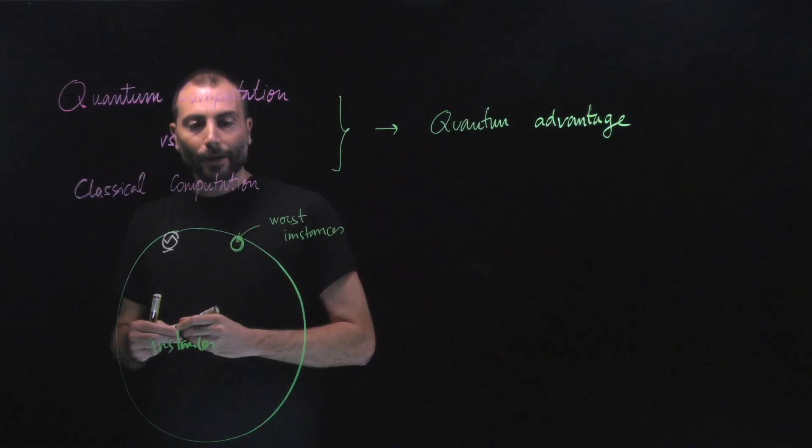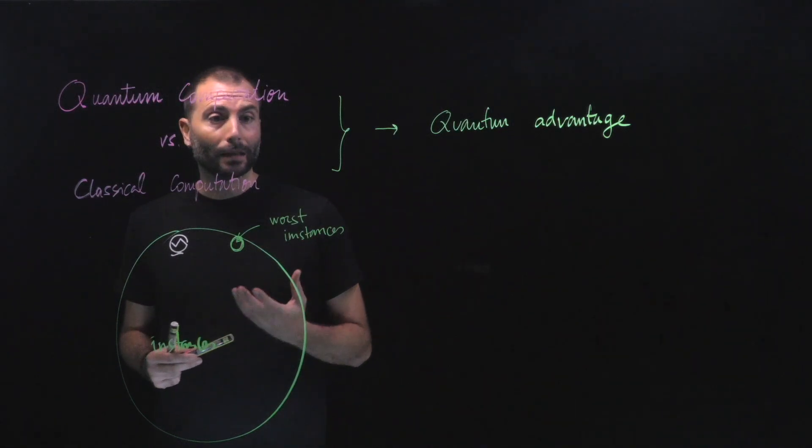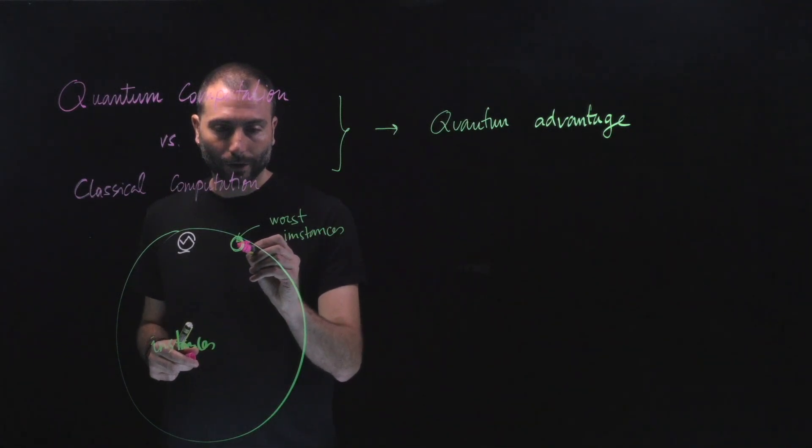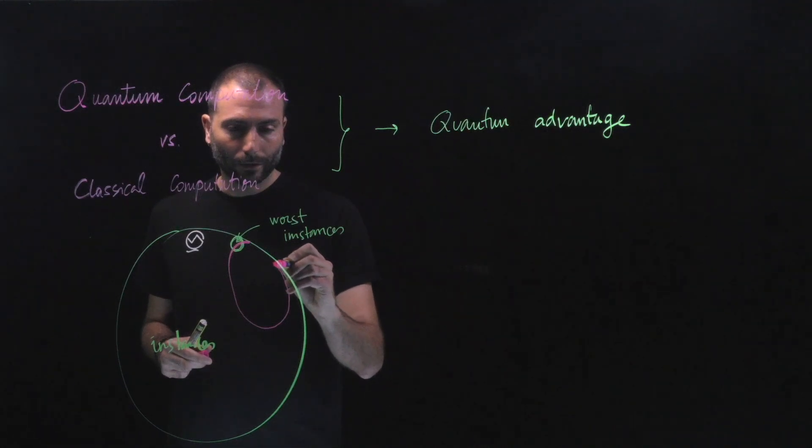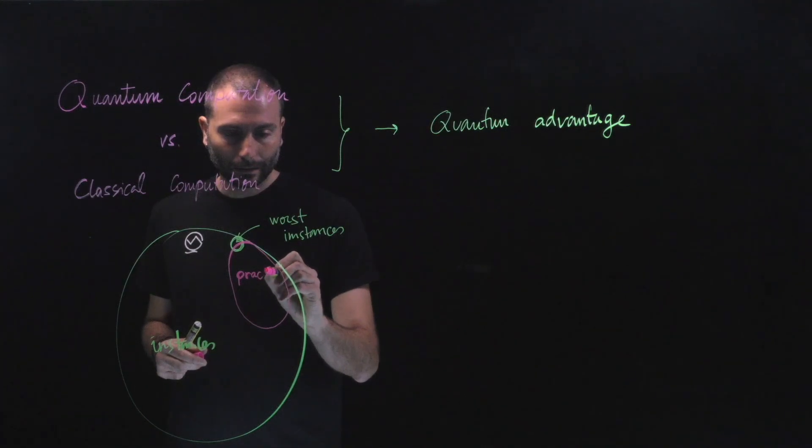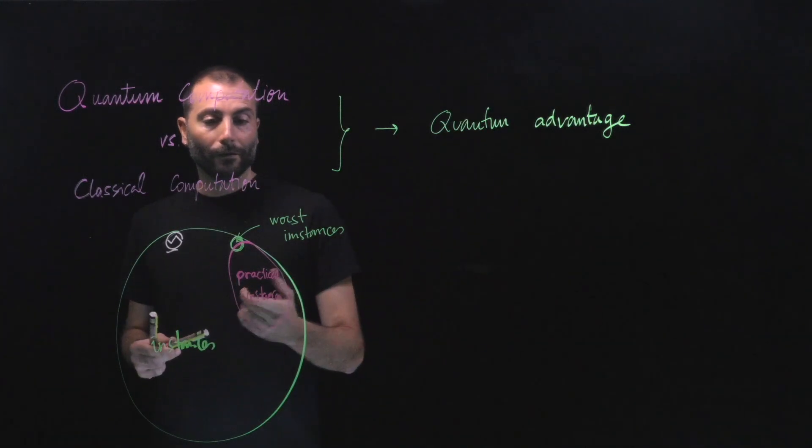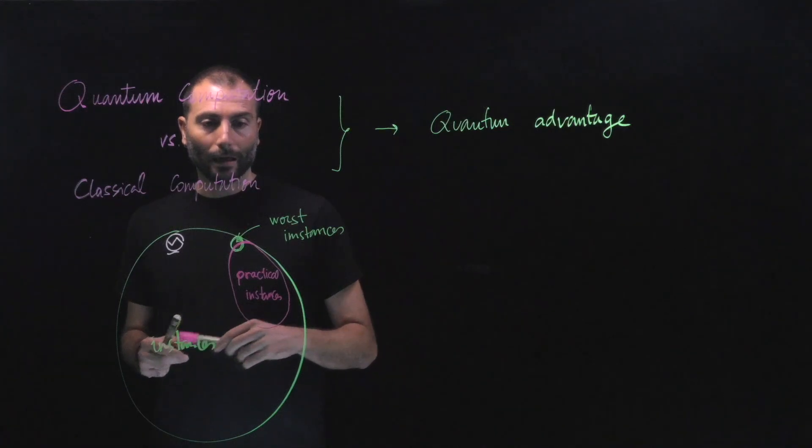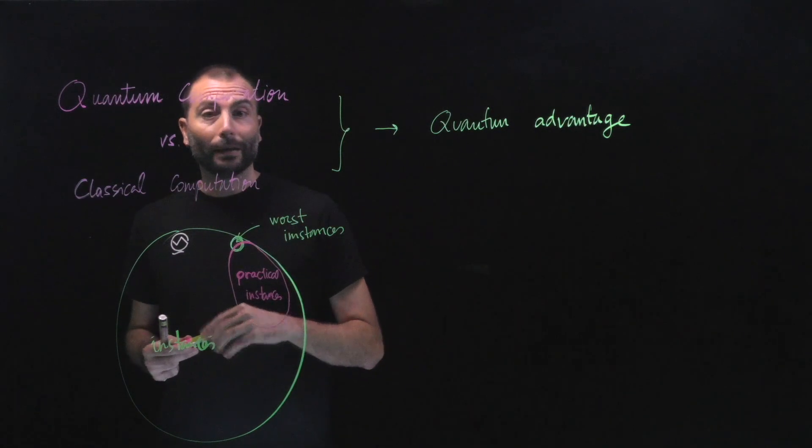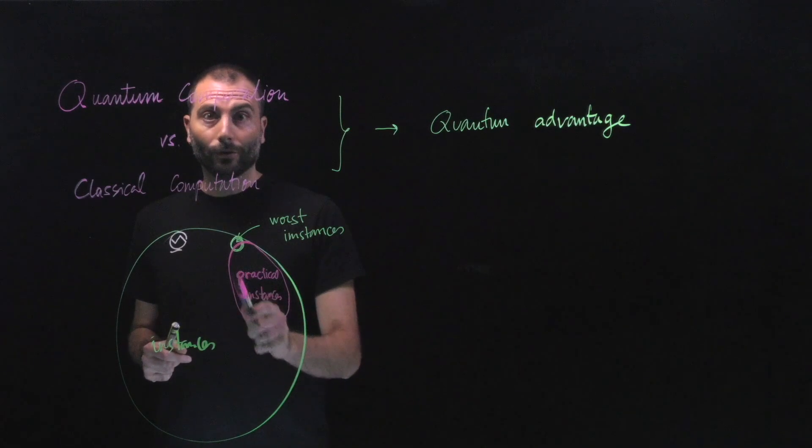The issue is that most optimization problems are interesting in practical situations. Therefore, it's very likely that the practical situations, or the set of instances that occur in practical situations, let's call them practical instances. It could very well be that the worst instances are very difficult both for classical computers and quantum computers, but in practice, when you try to solve interesting problems that occur in real life, quantum computers are better.